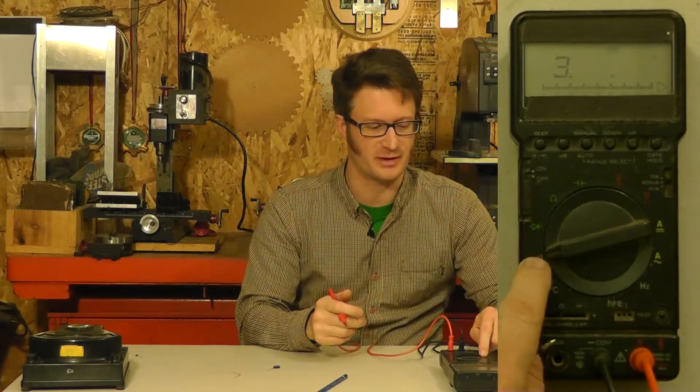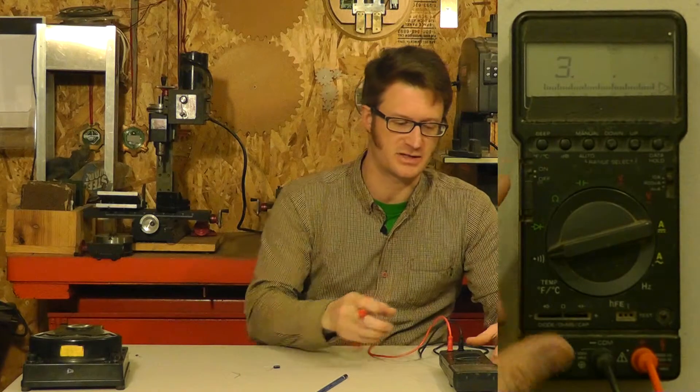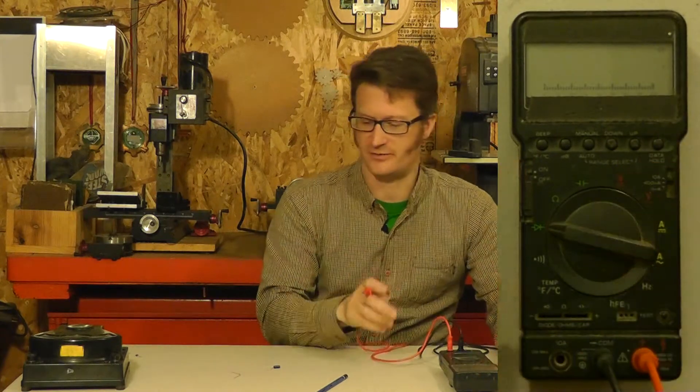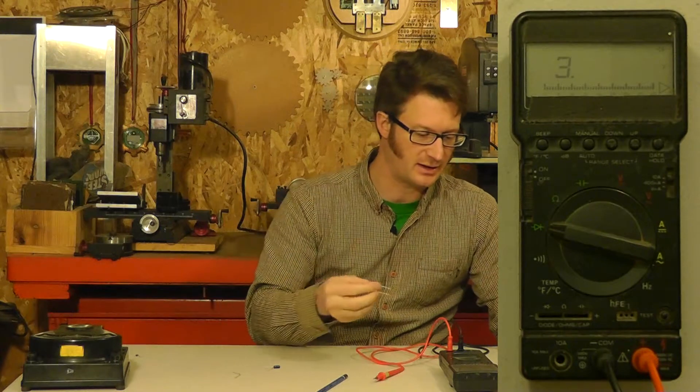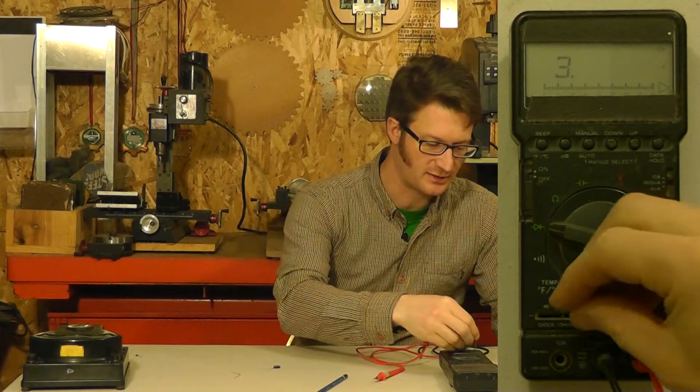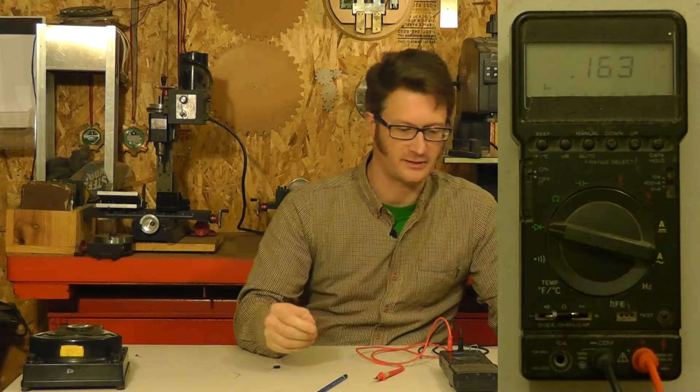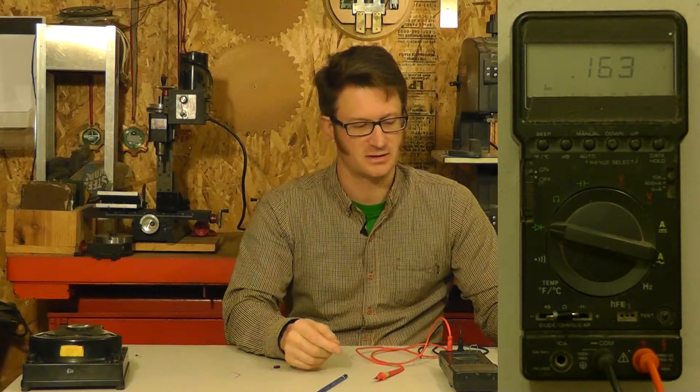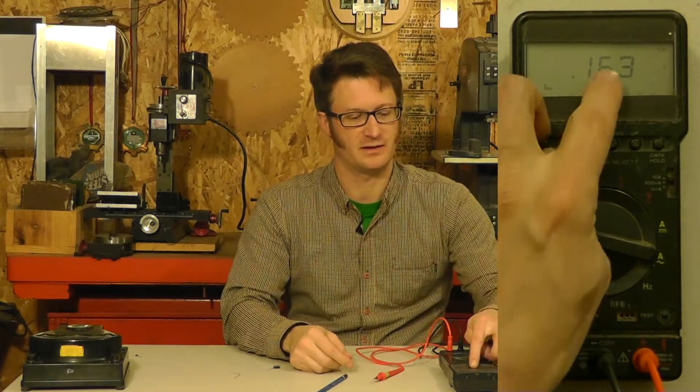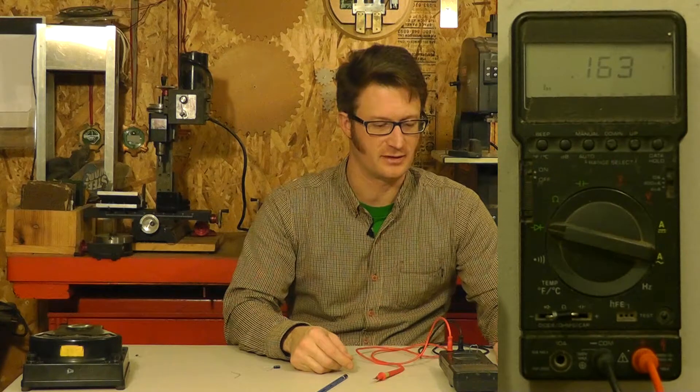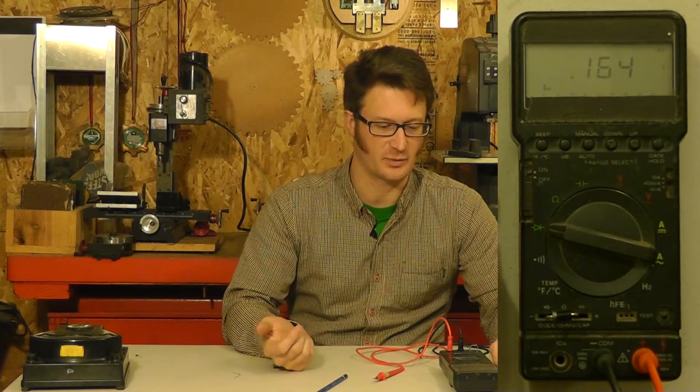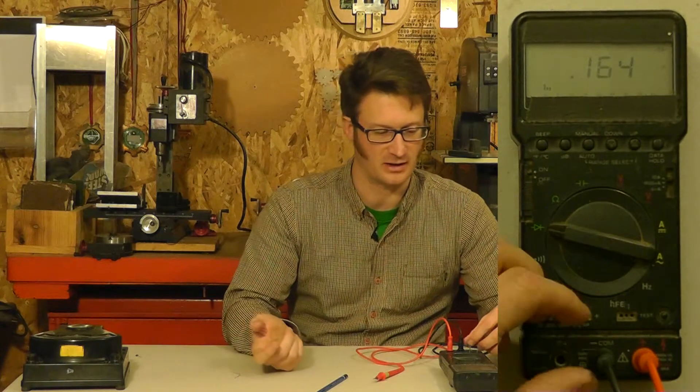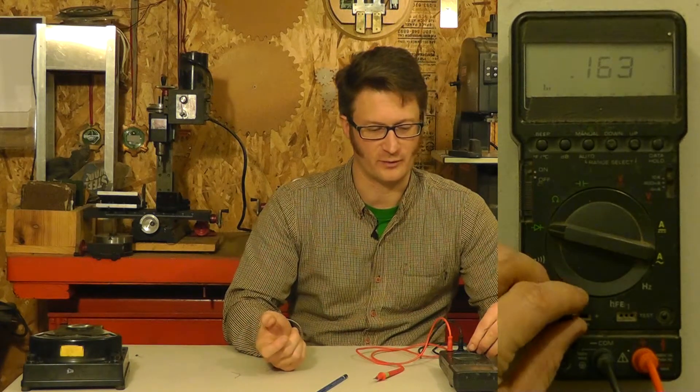Typically on a multimeter, this will be combined with diode check. For some reason, my multimeter has it separated. And for diode check, what it's going to tell me is the forward voltage that this diode has. So this is a Schottky diode, and so it has a pretty low forward voltage of 0.164 volts.